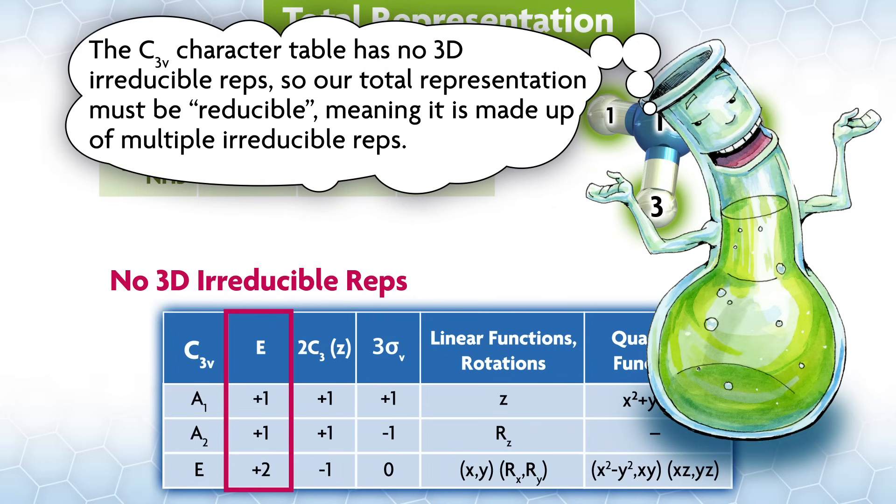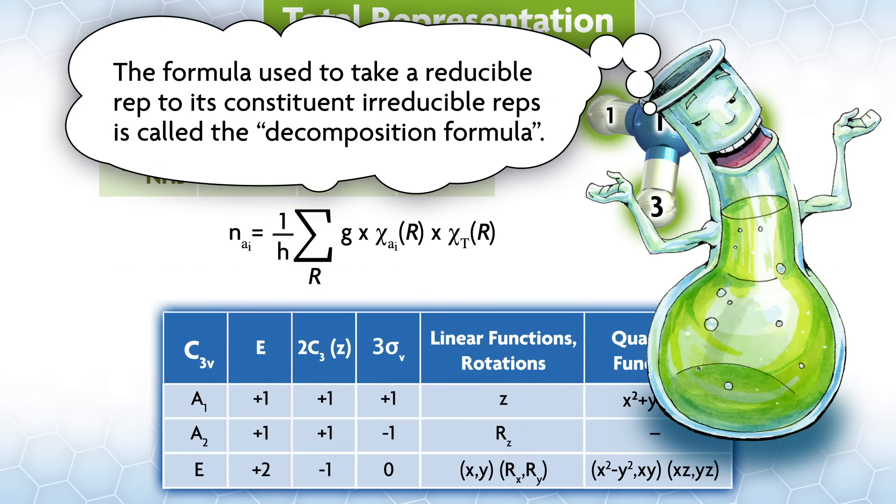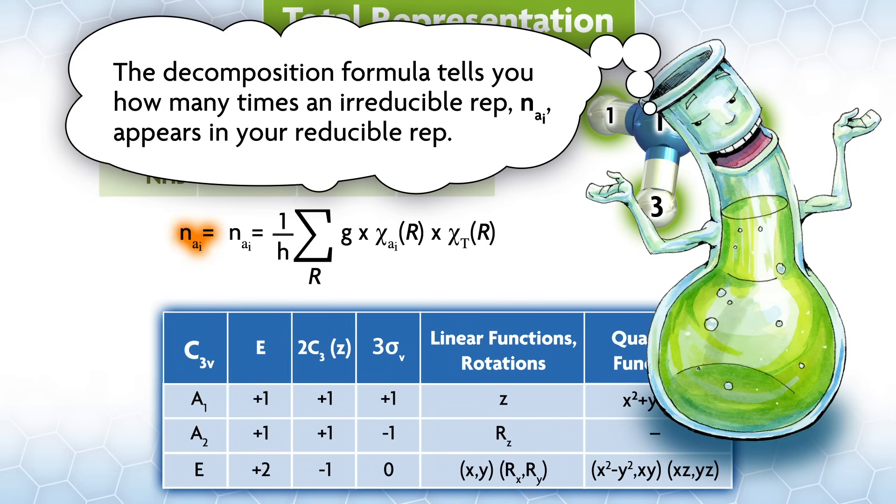Now we want to find what irreducible representations are in our total representation, gamma NH3. The C3v character table has no 3D irreducible rep, so our total representation must be reducible, meaning it's made up of multiple irreducible representations. The formula used to take a reducible rep to its constituent irreducible reps is called the decomposition formula.